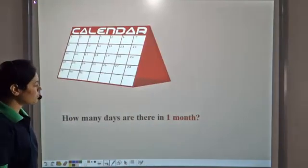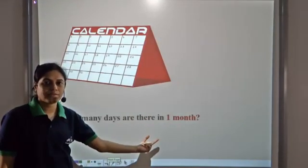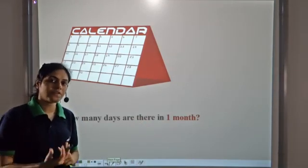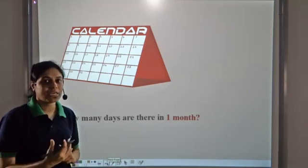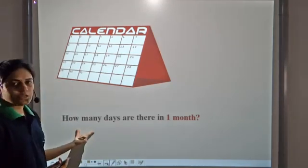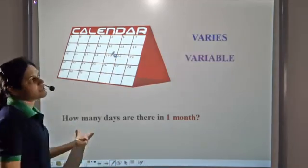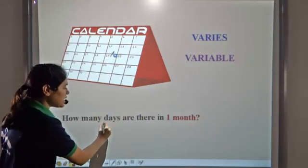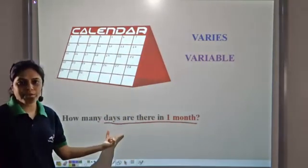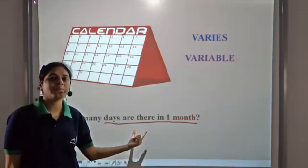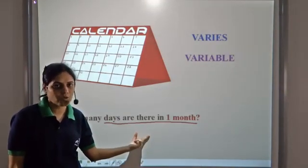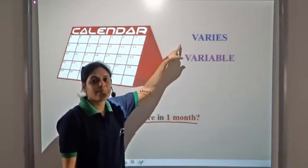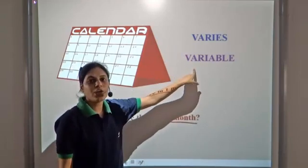Now if I ask you how many days are there in one month? You may say thirty for some months, thirty-one for some months, twenty-eight for some months. So this value is not fixed — it varies. Hence it is a variable. Days in a month is a variable because it depends on which month we are talking about. Values which are not fixed, which change and depend on something, are called variables.